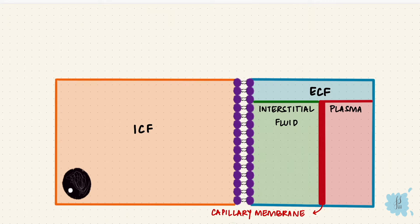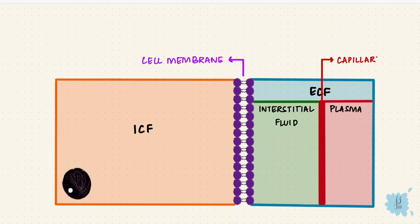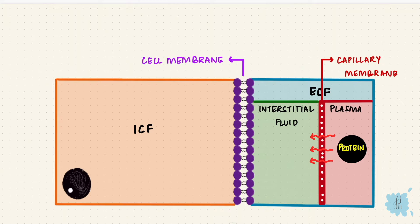These compartments have water, but they also have solutes. Between the ECF and the ICF is the cell membrane, and between the plasma and the interstitial fluid is the capillary membrane. Fluid from the plasma gets filtered through the capillary membrane to form the interstitial fluid, so the interstitial fluid is an ultrafiltrate of the plasma and its composition is similar to the plasma. The capillary membrane has pores which let solutes through except for proteins — proteins are too large and don't pass through, so the interstitial fluid has very little protein.